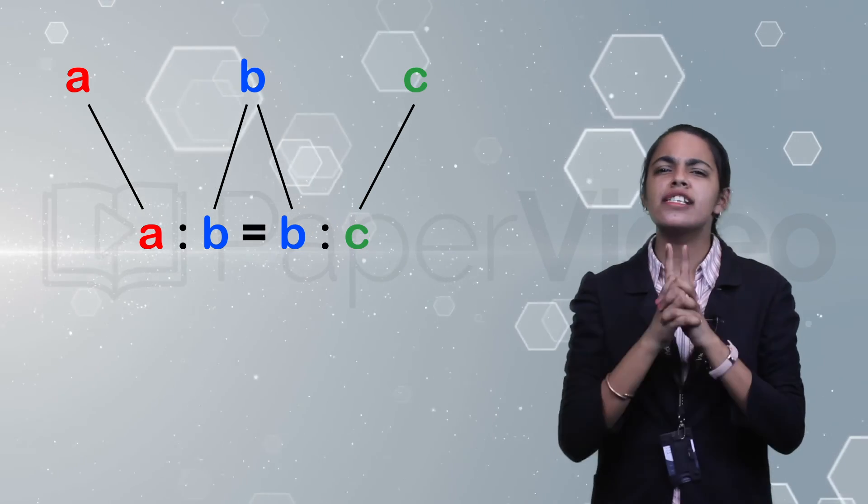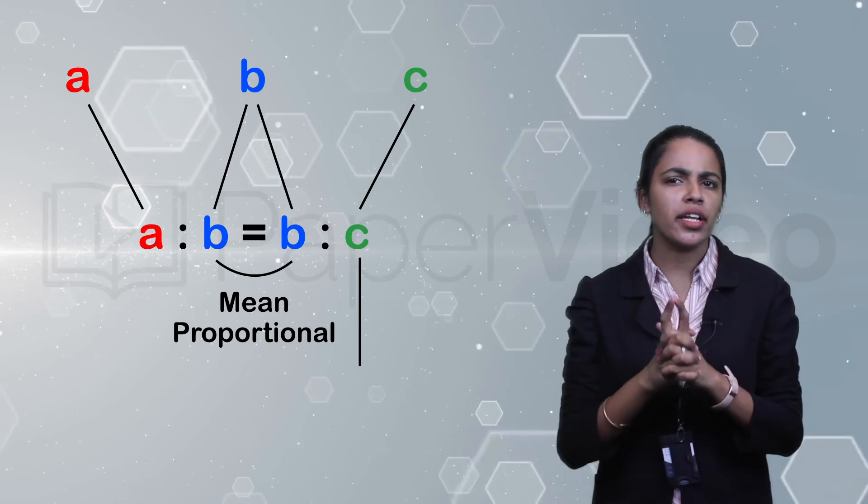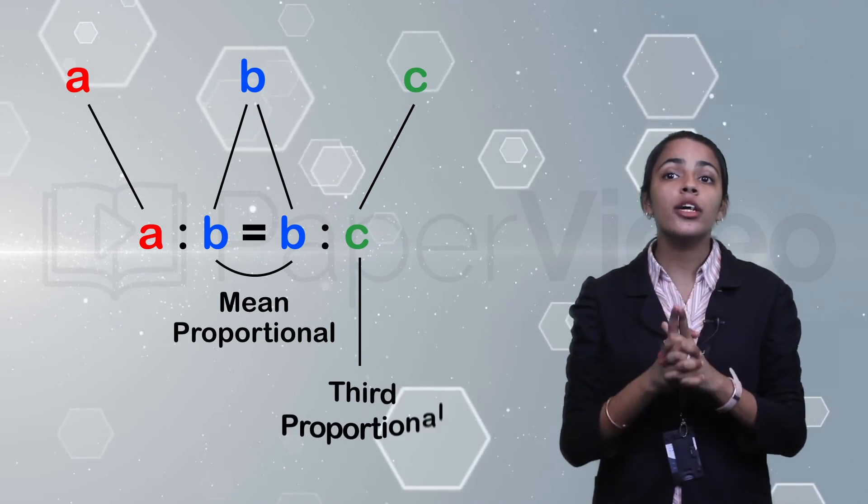In a continued proportion, the second quantity is known as mean proportional and the third quantity is known as third proportional.